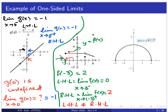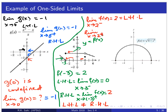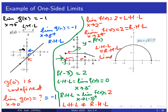On the other hand, let's look at x = 2. The limit as x approaches 2 minus — coming from the left — gives a value of 2. The limit as x approaches 2 positive — coming from the right — also gives a value of 2. Clearly the left-hand limit equals the right-hand limit, so the limit exists. That is, the limit of f(x) as x approaches 2 is 2.